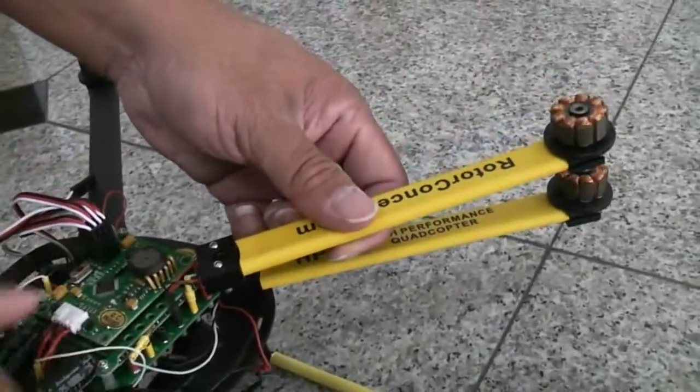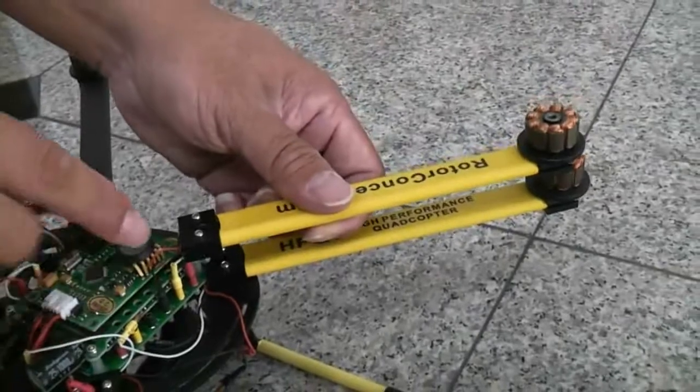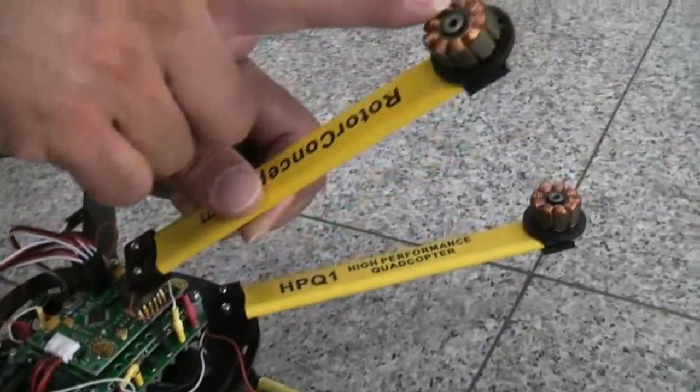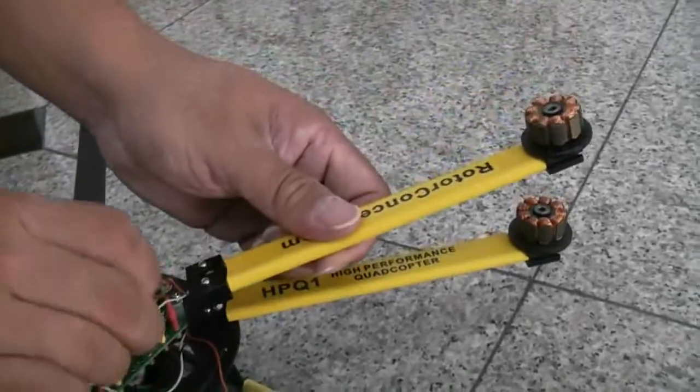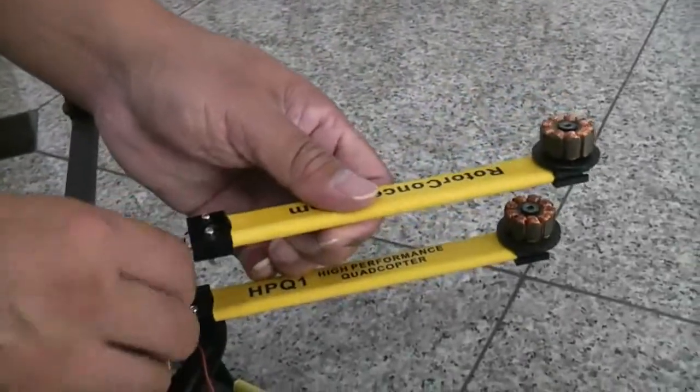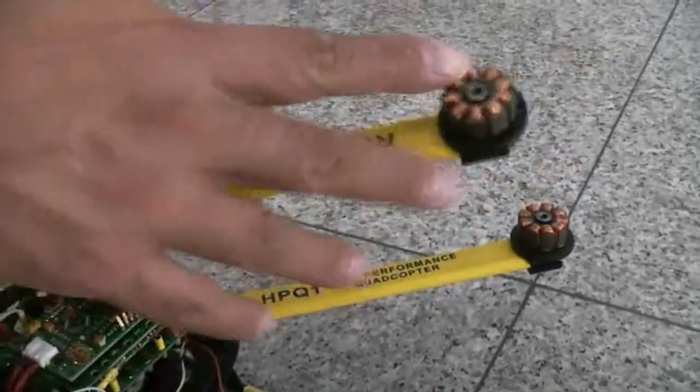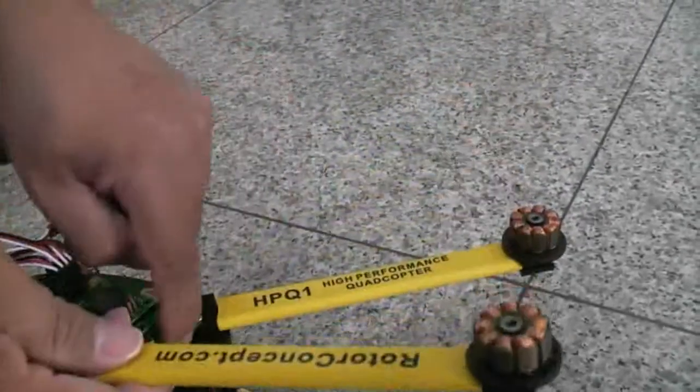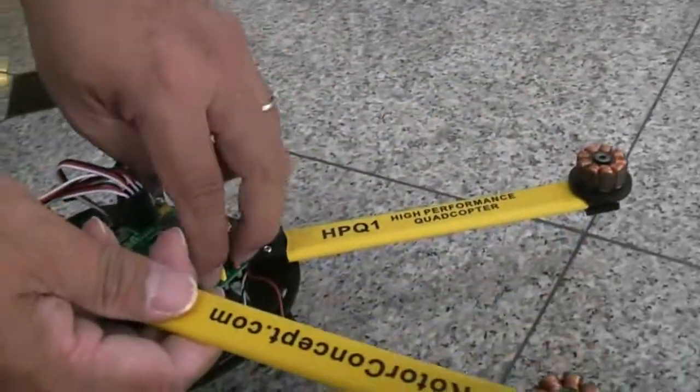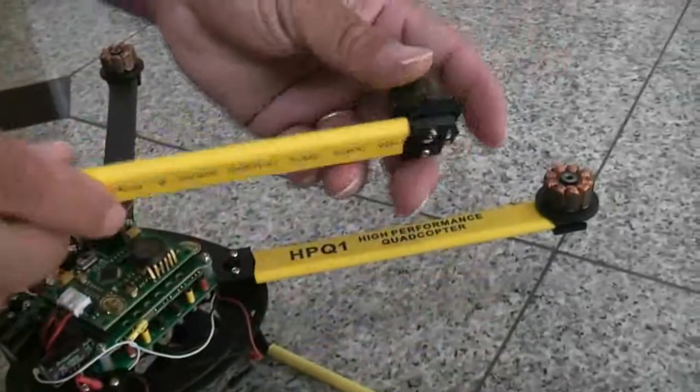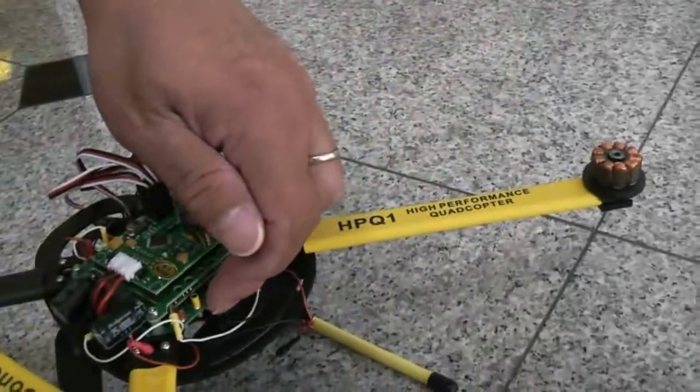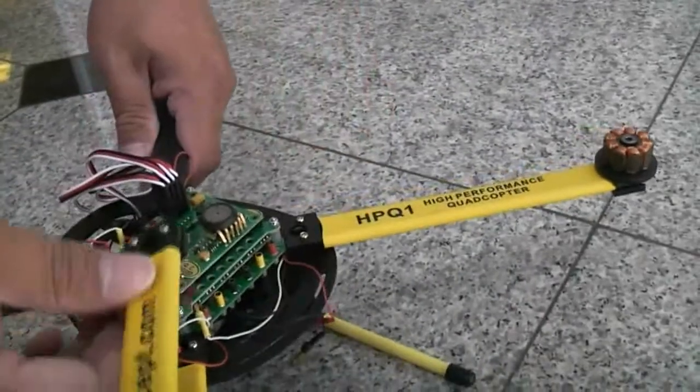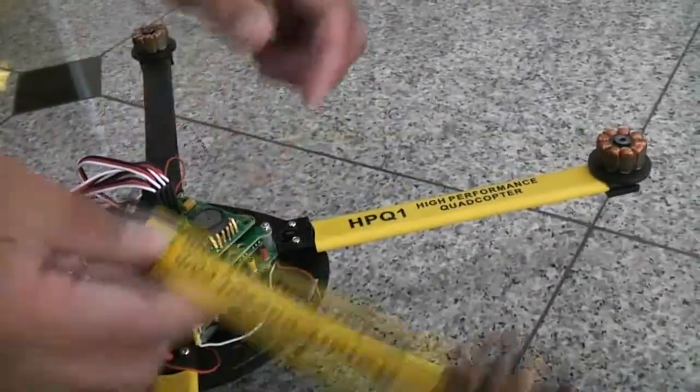The reason we're doing this is to test if it's the bad motor or a bad speed control. After you do the test and find out that this motor still not turning after replacing it with the new location, this motor is bad. Now you don't have to worry about the speed control board.